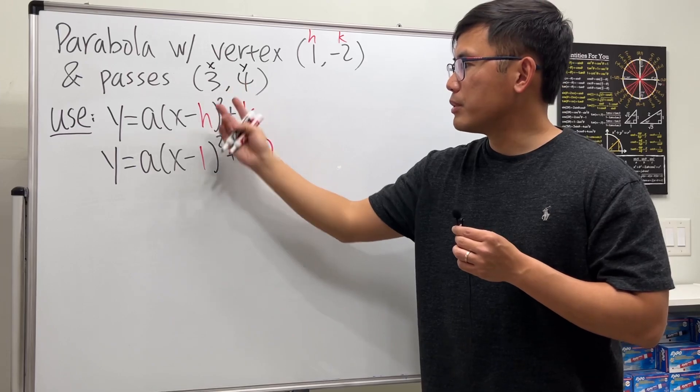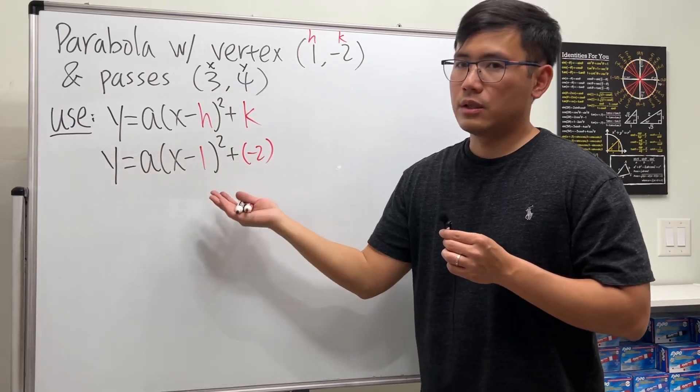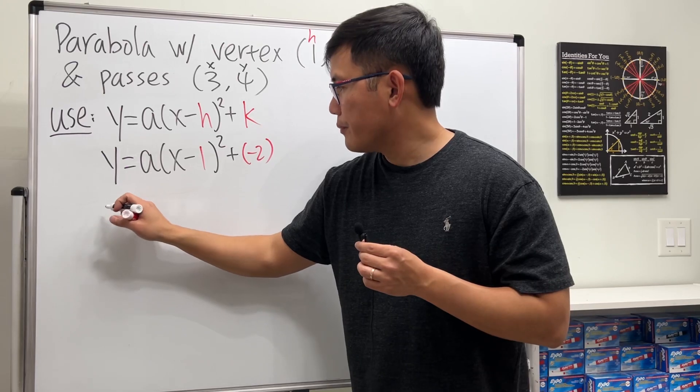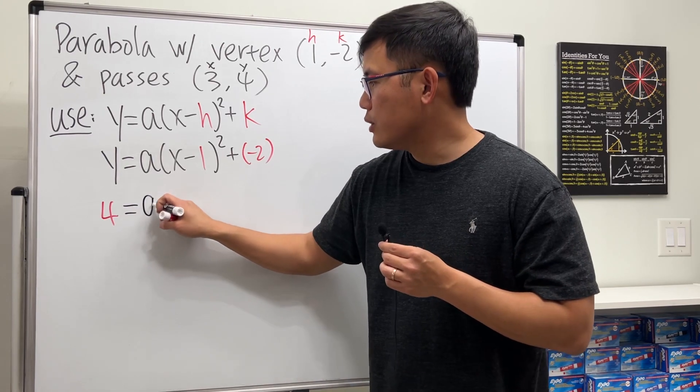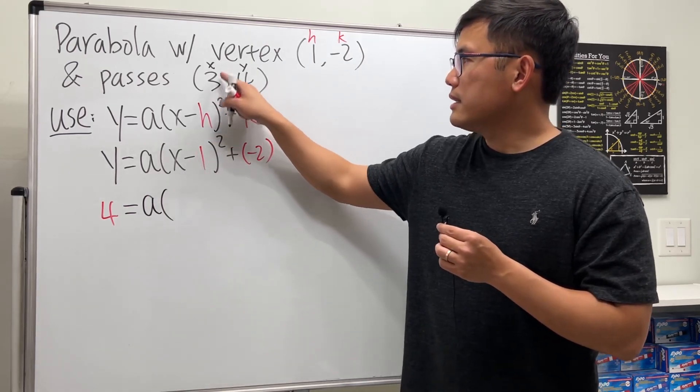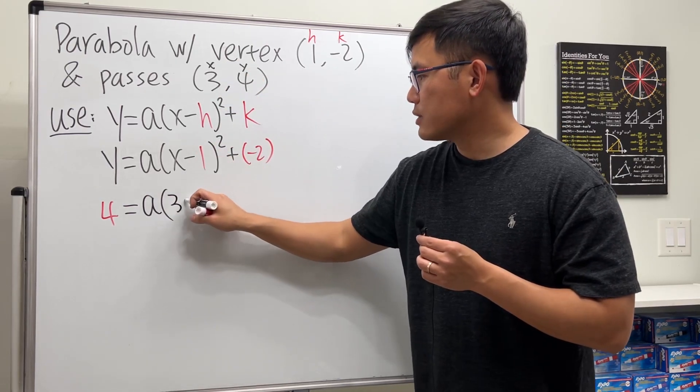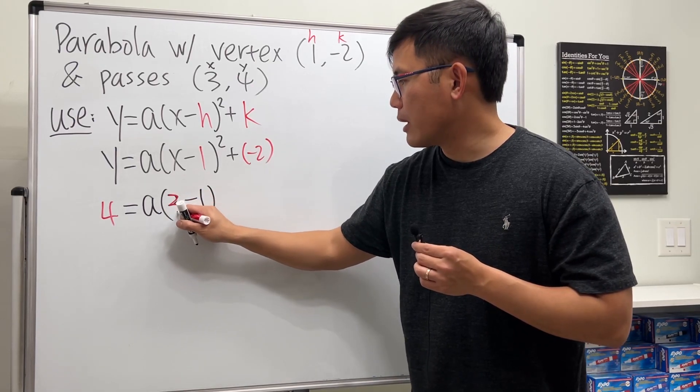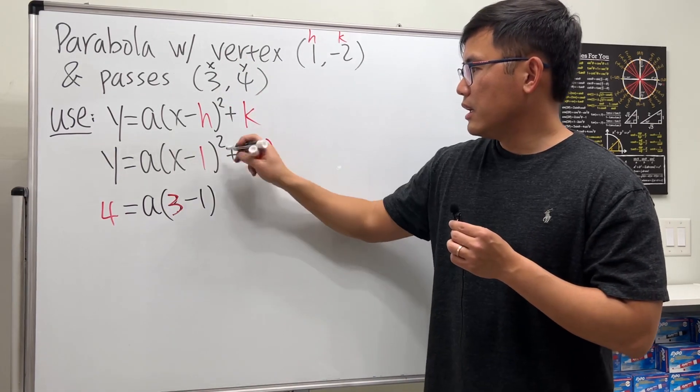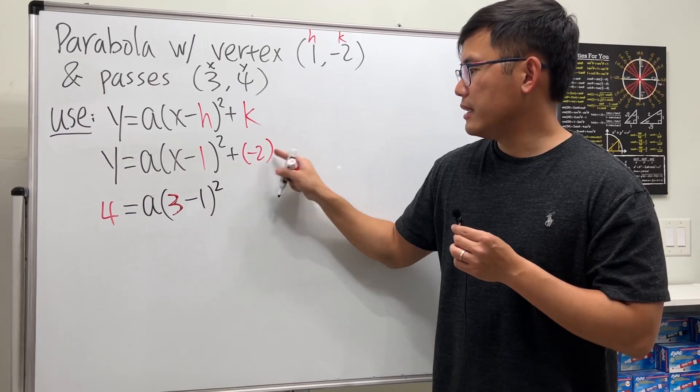So we will put these numbers into y and x correspondingly. So 4 here, that's equal to a we still don't know yet. x is 3 and then minus 1 and then square. So this was the number I plug in, that's 3 into x and the 1 from earlier, and this is minus 2 that's what we have.